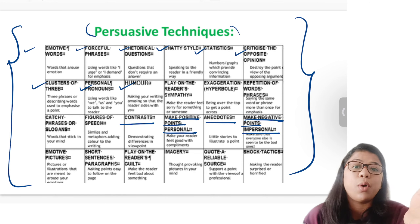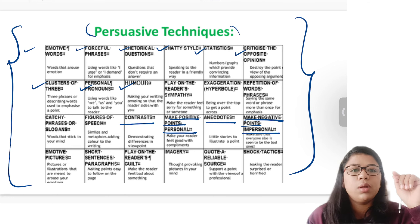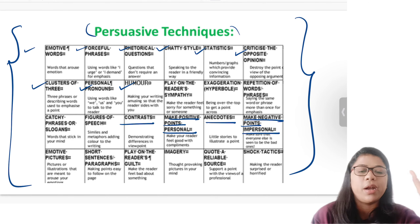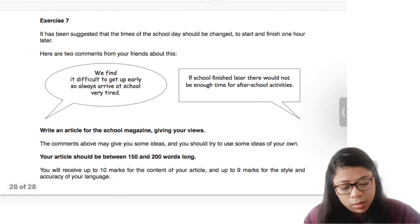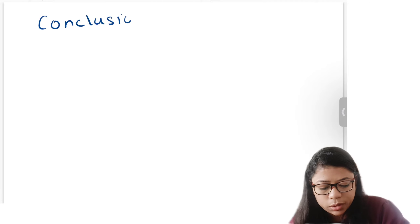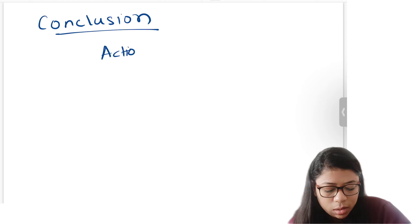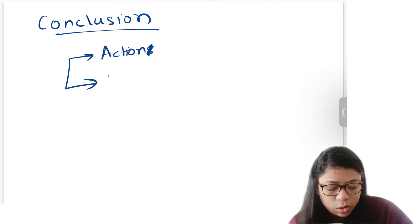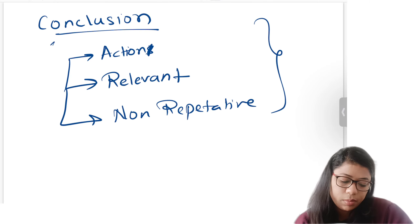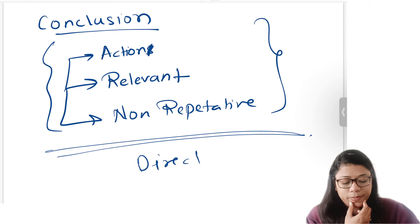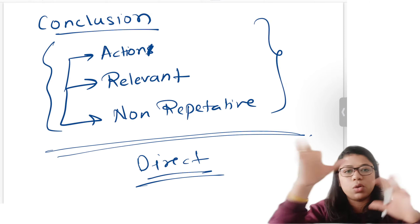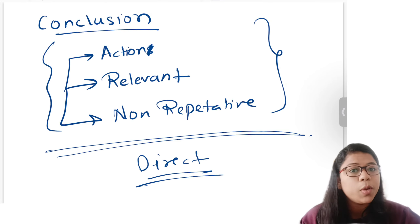If you'd like this document shared with you, please DM me on my Instagram handle — my team will respond. Moving on to the conclusion: remember three things. One — what action do you want your readers to take? Two — keep it relevant and non-repetitive. Three — make it direct. Don't beat around the bush. Be clear and straightforward in your concluding paragraph.